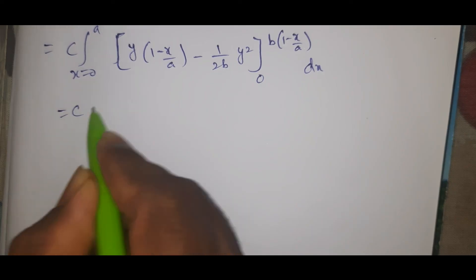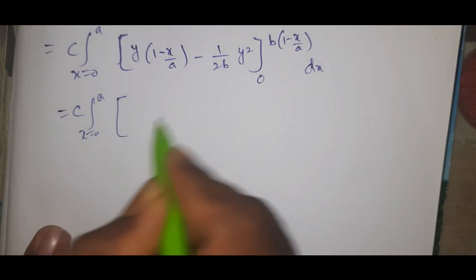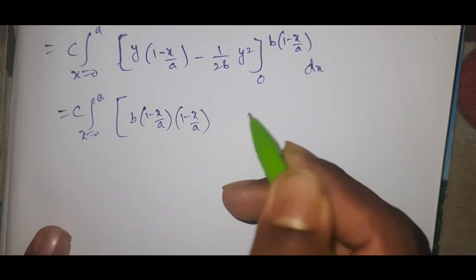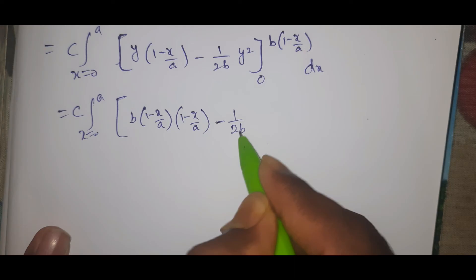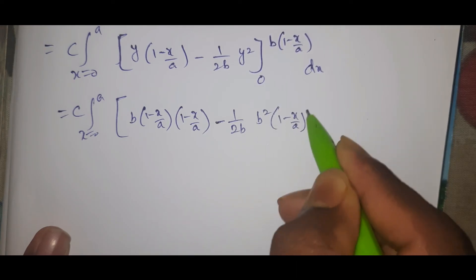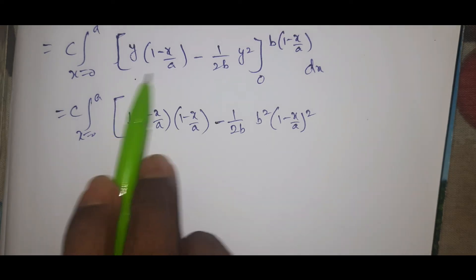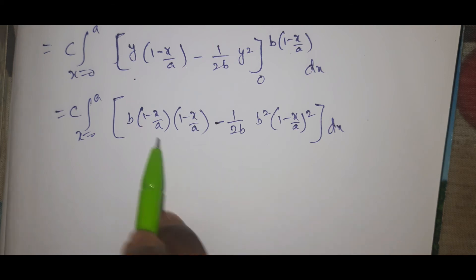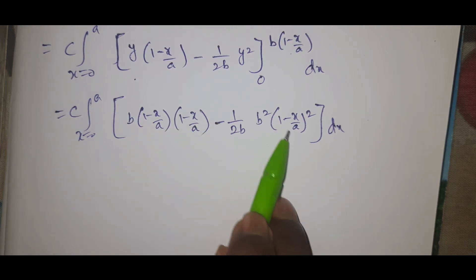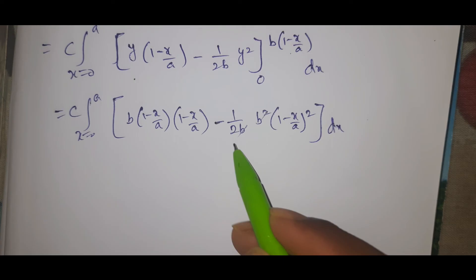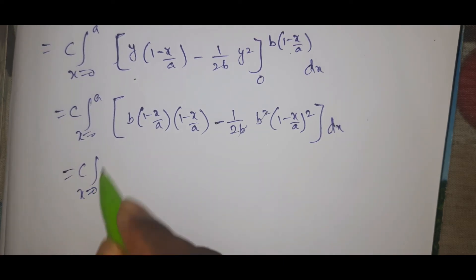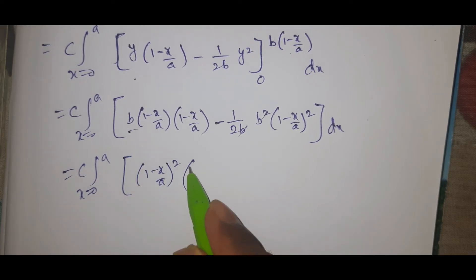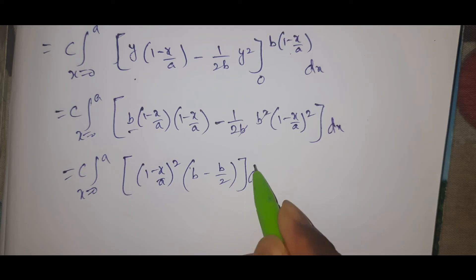Now integrating with respect to y: c times the integral from 0 to a of [y - (x/a)y - (1/2b)y²] evaluated from 0 to b(1 - x/a) dx. Substituting the upper limit b(1 - x/a) gives b(1 - x/a) - (x/a)·b(1-x/a) - (1/2b)·b²(1-x/a)².